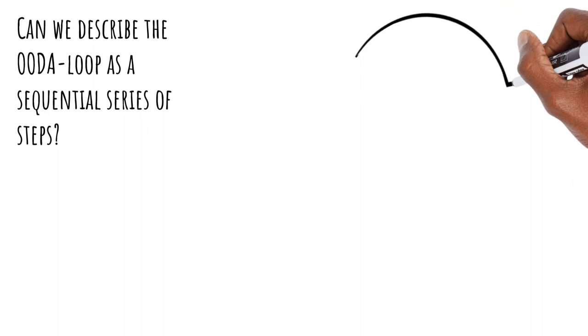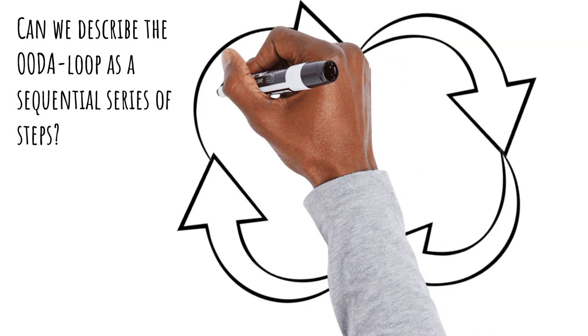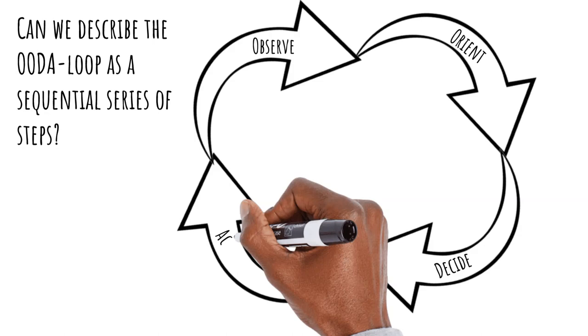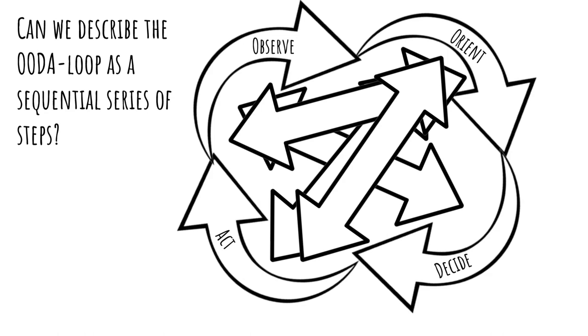Finally, we get to the OODA loop itself. Often people try to simplify these types of models to a simple, sequential circle of steps. Can we do this for the OODA loop as well? If we would try to describe the OODA loop in this oversimplified view, we would need to draw all kinds of extra arrows to allow for the interactions and feedback loops. It would become a messy picture. So the answer is a resounding no.